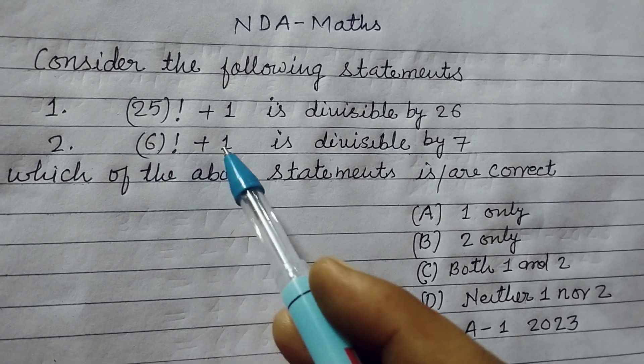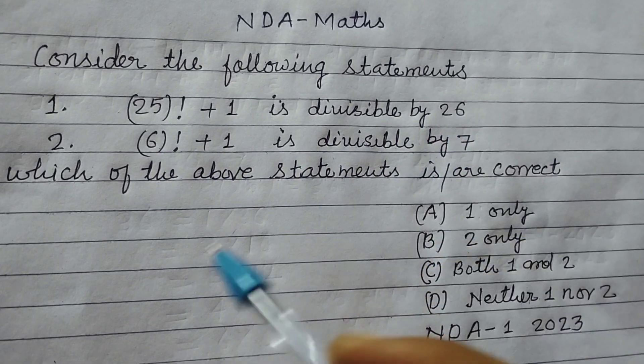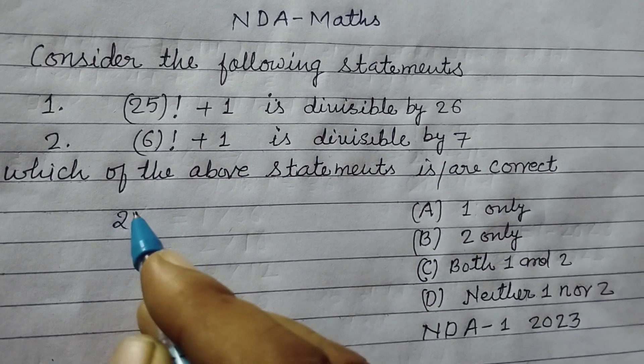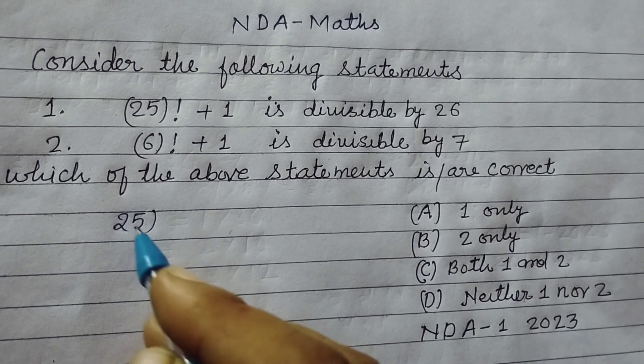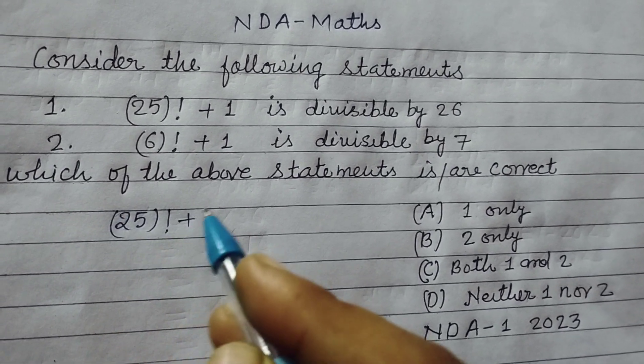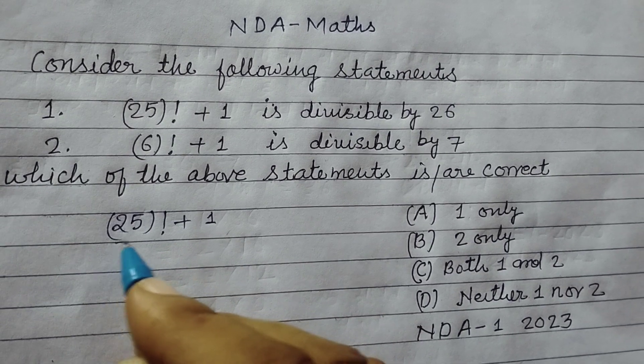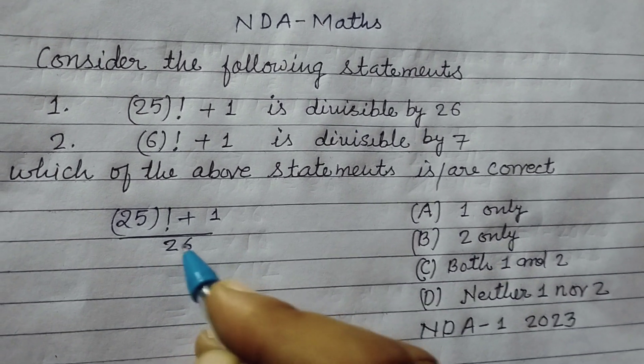Second is factorial 6 plus 1 is divisible by 7. So first we check that 25 factorial plus 1 is divisible by 26 or not.